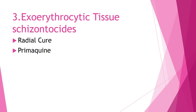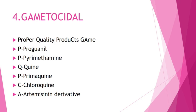Fourth is gametocidal drugs. To remember, the mnemonic is PROPER QUALITY PRODUCTS GAME: P for proguanil, P for pyrimethamine, Q for quinine, P for primaquine, C for chloroquine, and A for artemisinin derivatives. That covers all classifications of anti-malarial drugs.